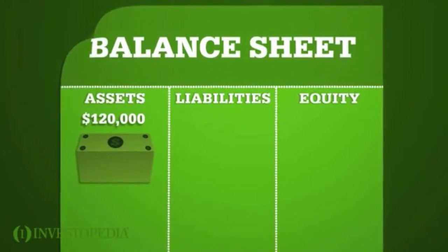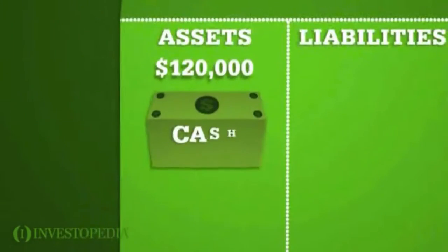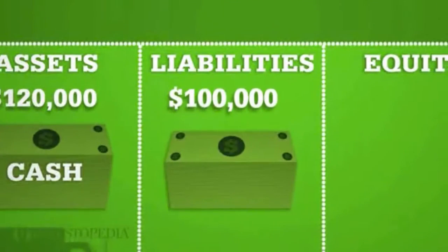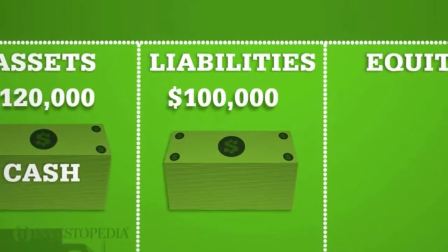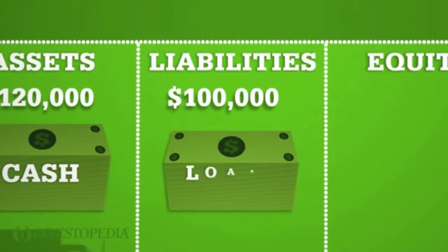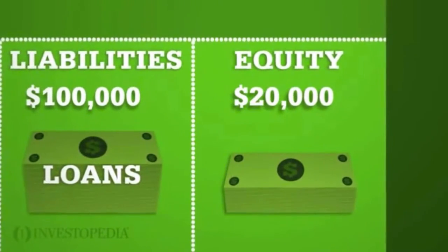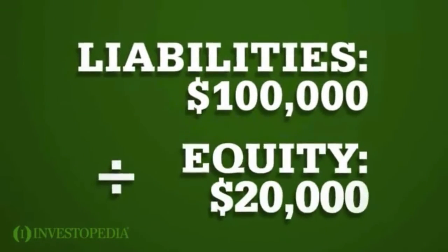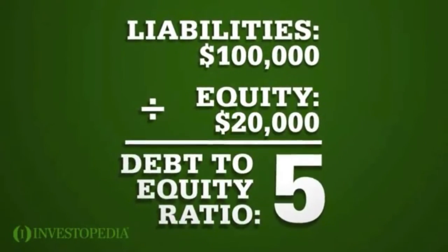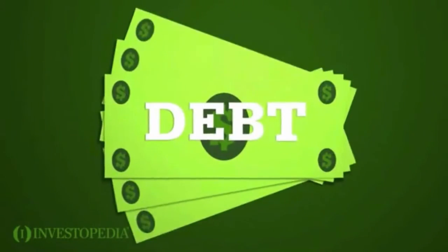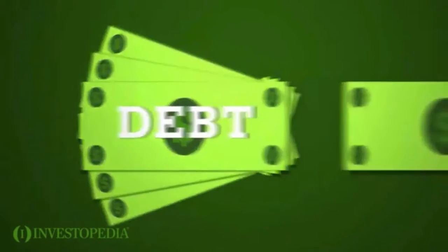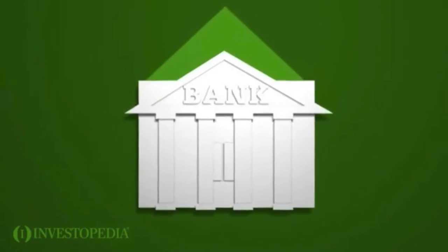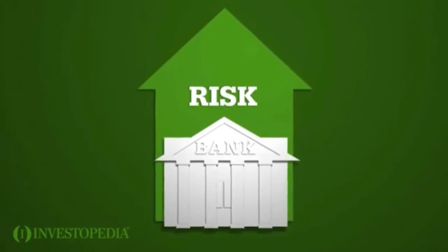Ed has $120,000 in assets — cash, equipment and so on. Ed also has $100,000 in liabilities, mostly loans. So Ed's equity is $20,000. The loan officer divides Ed's liabilities by his equity to come up with a ratio of 5. This means Ed has $5 of debt for every $1 of equity. Ed is highly leveraged, so he's a high risk for the bank.